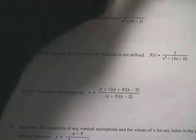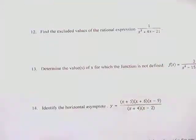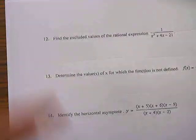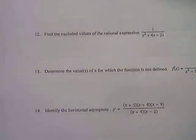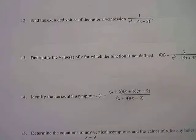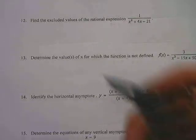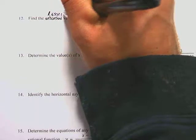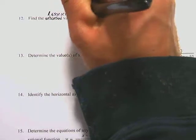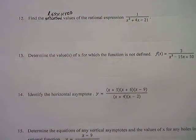The first thing we're supposed to do is find the excluded values of the rational equation 1 over x squared plus x minus 21. The word excluded means exactly the same as restricted, so we're still finding the restricted values here.